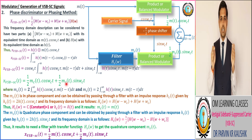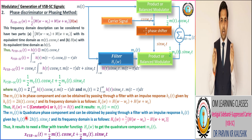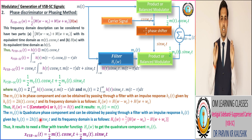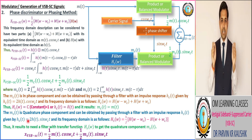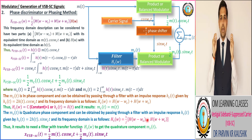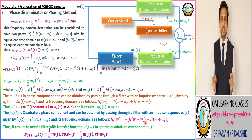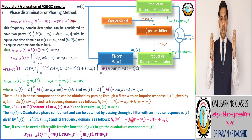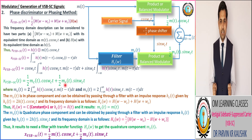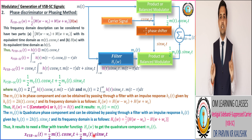Now we take the second component ms(t), which is the quadrature phase component. It is also obtained by passing the modulating signal through a filter with impulse response hs(t) = 2h(t)sin(ωct). Taking the frequency domain representation gives Hs(ω) = (1/j)[H(ω - ωc) - H(ω + ωc)]. To obtain the ms(t) term we require a filter with transfer function Hs(ω), and thus the quadrature component ms(t) is calculated.